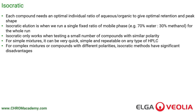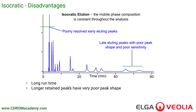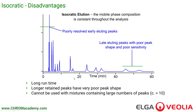However, for complex mixtures or compounds with different polarities, isocratic methods have significant disadvantages. One disadvantage is very long run times — analysis can take an hour to get substances out. We also get poor resolution and poor separation of early peaks. Peaks that don't spend long in the column will not be well separated, while other substances eluting very late stick in the column too long, spreading out and giving very poor peak shape and poor sensitivity. We end up with long run times, poor peak shape for long-retaining peaks, and we really can't use isocratic with mixtures containing large numbers of substances — probably more than 10 peaks. Contamination also builds up in the column, as the mobile phase isn't strong enough to elute substances with very high affinity for the stationary phase.